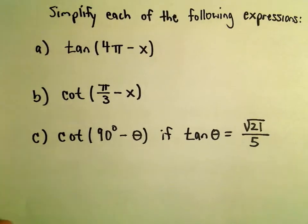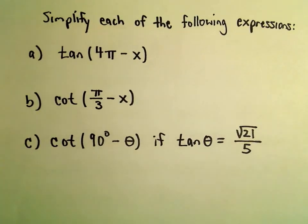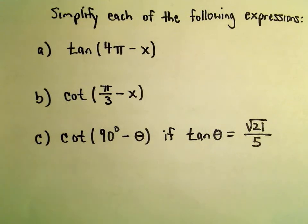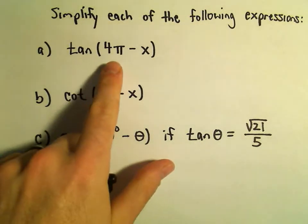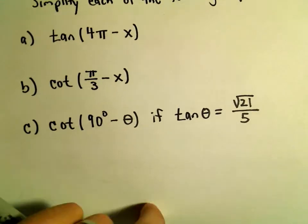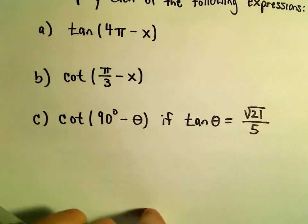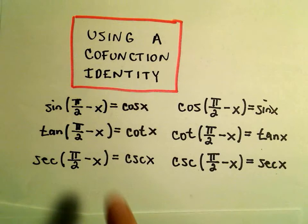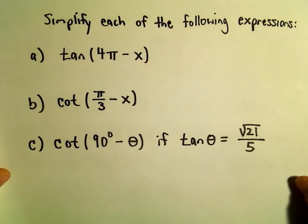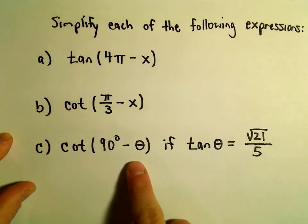So here we're going to simplify each of these following expressions. Not all of them make use of this co-function identity, so part of it is knowing when you can use it. Basically you can use it if the angle at the beginning, the first term, is either 90 degrees or pi over 2. So it looks like to me we'll only actually use this co-function identity on this last one.